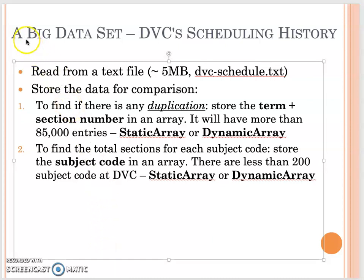In this video, we will start working on our big data application, dvcschedule. We will read the data from the text file, dvcschedule.txt, which is almost 5 megabytes. From our lab exercise this week, you can see we have almost 90,000 lines, and each line includes one course section from year 2000 for all the courses we offer in DVC.